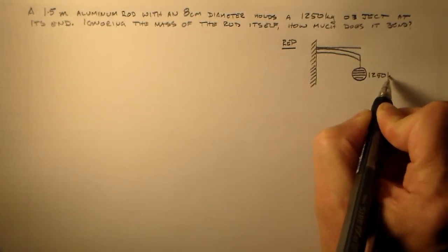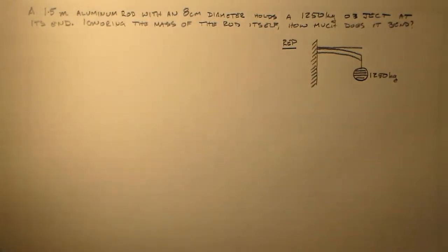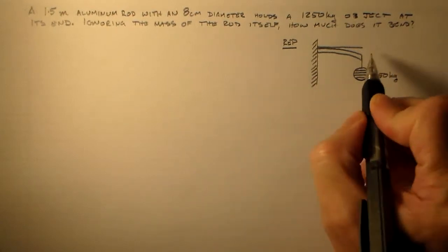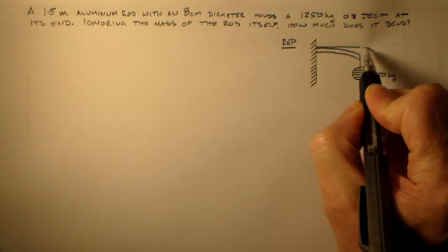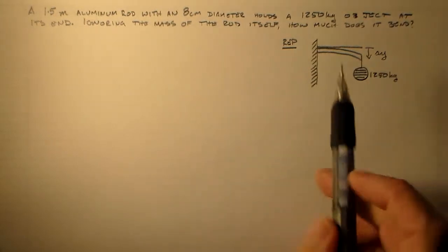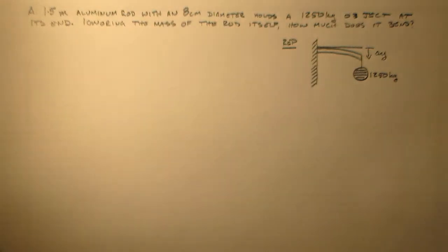And then I'm going to have my object down here. It's 1,250 kilograms. So I want to look at that, and I want to figure out how far it's deflected down here. So this amount here, delta y. Now this is a very thick rod again, so it's probably pretty stiff, so it shouldn't be very much.